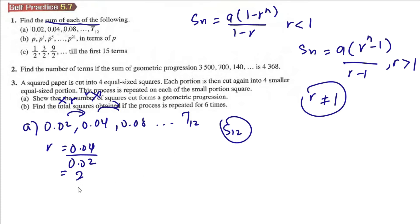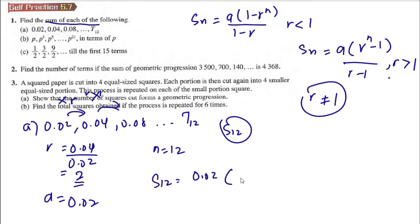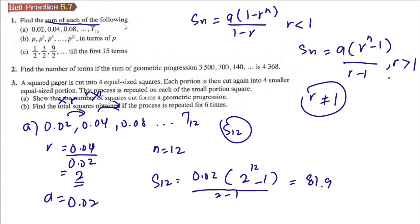Since R is larger than 1, we use the formula Sₙ = A(Rⁿ - 1) / (R - 1). Here A = 0.02, R = 2, and N = 12. So S12 = 0.02 × (2¹² - 1) / (2 - 1).